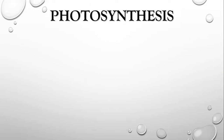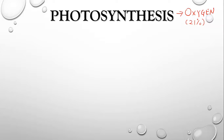Now coming to the topic of photosynthesis. Photosynthesis is a process that releases oxygen — it helps in releasing the oxygen that we breathe. About 21% of the oxygen present in the atmosphere comes from various sources, one of which is photosynthesis. This process is used by plants, algae, and certain bacteria to turn sunlight, carbon dioxide, and water into food and oxygen.